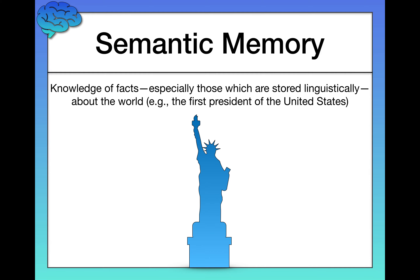Explicit memory is further divided into two types, starting with semantic memory. Semantic means meaning. Semantic memory is knowledge of facts about the world, especially facts that are stored linguistically — as a sentence in your brain. For example, if I asked you who was the first president of the United States or who is the current president, that is all semantic memory.